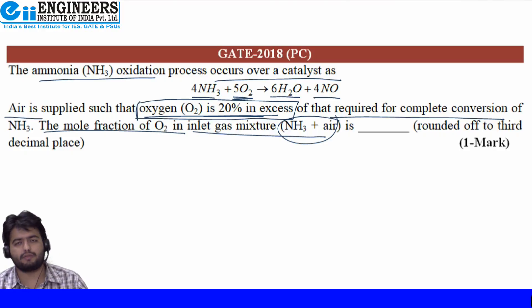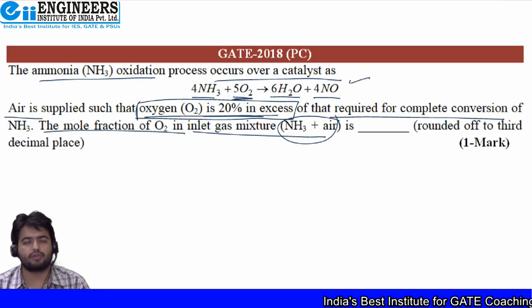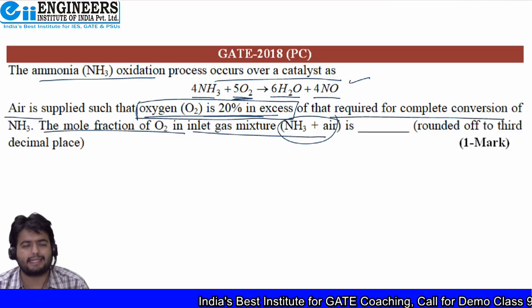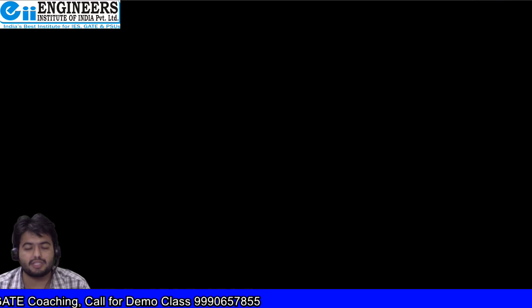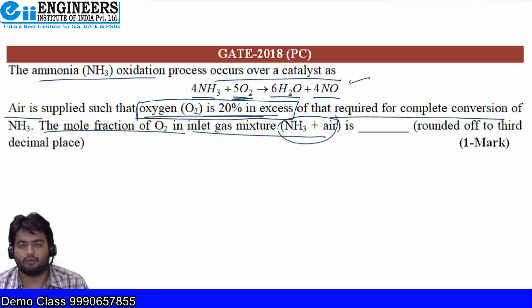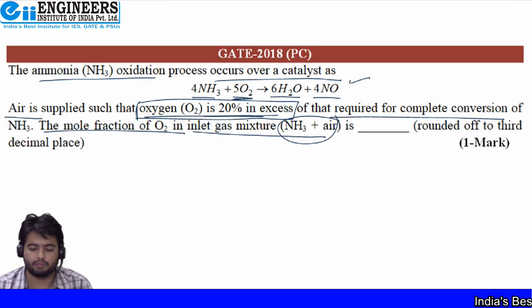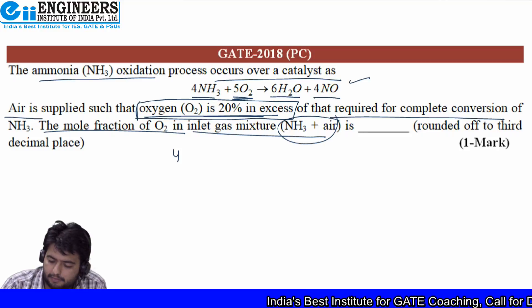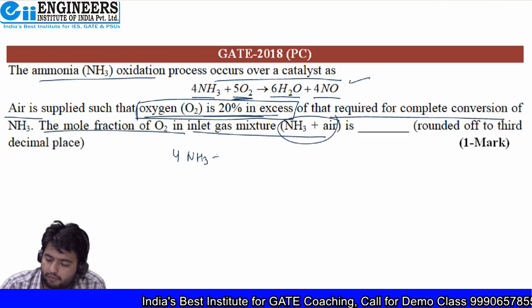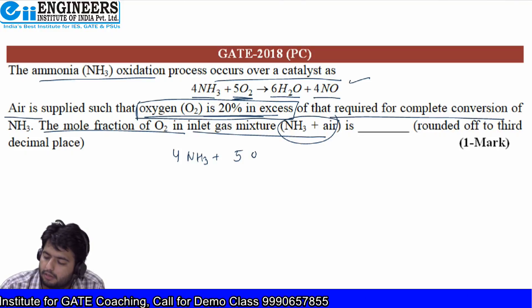For doing such problems, first you need to write down the reaction itself. Then according to stoichiometry you have to find out how many moles of each reactant is reacting to produce how many moles of each product. Writing down the stoichiometry: 4 NH3 + 5 O2 → 6 H2O + 4 NO.